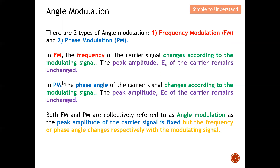As for PM, the phase of the carrier changes according to the modulating signal, while the amplitude and frequency remain unchanged. Both FM and PM are collectively referred to as angle modulation, as the peak amplitude of the carrier signal is fixed but the frequency or phase angle changes respectively with the modulating signal.